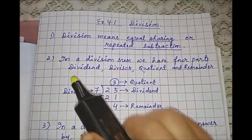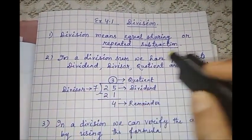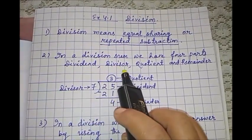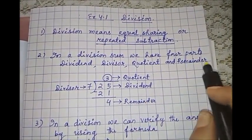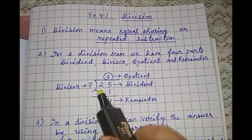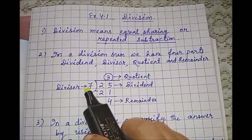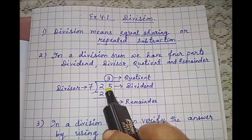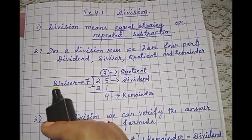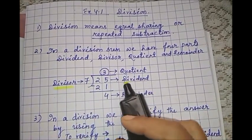In a division term, we have four parts. What are the four parts? Dividend, divisor, quotient and remainder. So in class 2, you know this simple division: 25 is divided by 7. The number that is divided is called dividend. And it is divided by which number? That is called divisor.